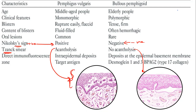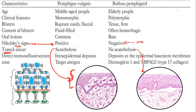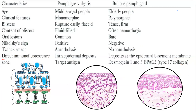The reason for these differences: in pemphigus vulgaris, antibodies are against the desmosomes — the intracellular substance — causing separation of cells (acantholysis). In bullous pemphigoid, antibodies are against the basement membrane zone, causing a split rather than acantholysis, so the epithelium remains intact. On direct immunofluorescence, pemphigus shows intraepidermal deposits with a chicken-wire or fishnet pattern, whereas bullous pemphigoid shows a linear deposition of IgG antibody at the basement membrane zone.